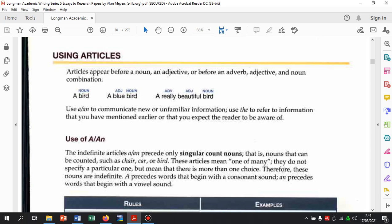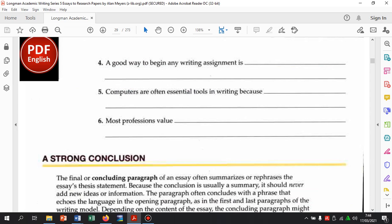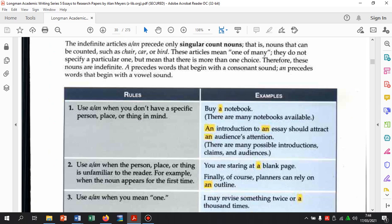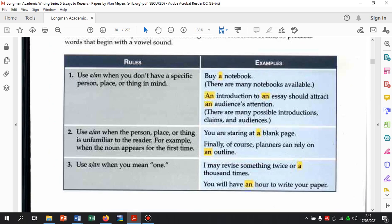Use an to communicate new unfamiliar information. Use the to refer the information that you have mentioned earlier or that you expect the reader to be aware of. Jadi, kalau misalnya pakai a itu lebih kepada informasi umum yang belum pernah disebutkan atau unfamiliar information. Kepada informasi yang baru. Tapi, the untuk menjelaskan informasi yang sebelumnya. Yang udah kita sebutkan. Itu lebih spesifik dia kan.